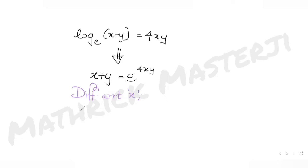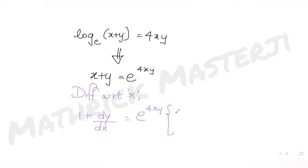Differentiating, I get 1 + dy/dx equals e^(4xy) into the derivative of 4xy, which is 4 times the derivative of xy — that is x·(dy/dx) plus y times the derivative of x, which is 1.